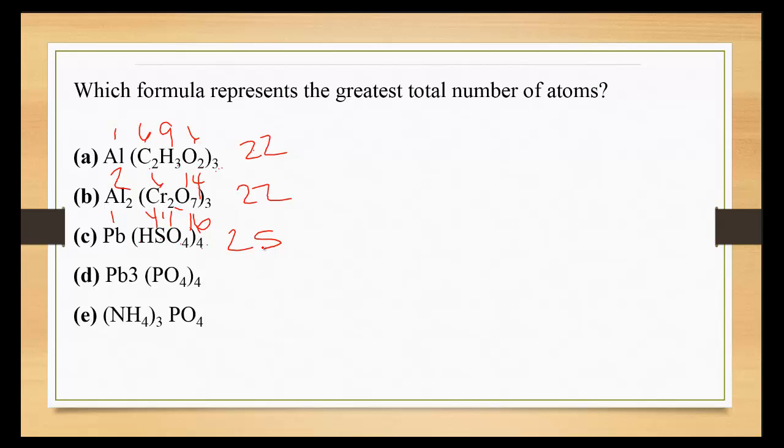Lead is 3. 1 times 4 is 4. 4 times 4 is 16. This gives us 23. And finally, 1 times 3 is 3. 4 times 3 is 12. One and 4. That gives us 20. So that means C, lead hydrogen sulfate, is the final answer.